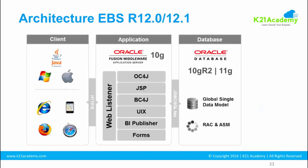Now for 12.0 and 12.1 — same three-tier architecture, with the database on the right, middle application tier, and client or desktop tier on the left. In 12.0 and 12.1, the database was 10g R2 or 11g, and you can now upgrade to 12c as well by applying some patches. On the middle tier, the application server moved from 10.1.2.2.2 to 10g application server, and you had OC4J — Oracle Container for Java — as the Java component, replacing the older JSERV from 11i. BI Publisher was also introduced for reporting purposes.